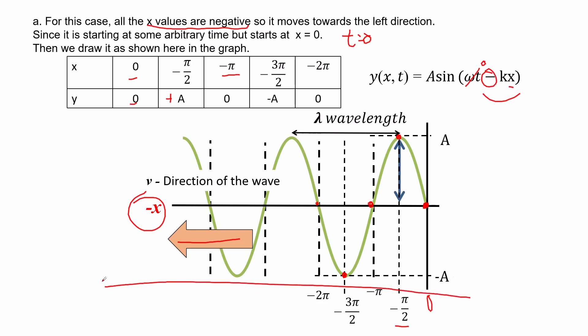We do not forget to write the amplitude and the wavelength, which is the distance between two successive identical points on the wave. If you have this point here and the next identical point here, the total length between these two points is the wavelength.